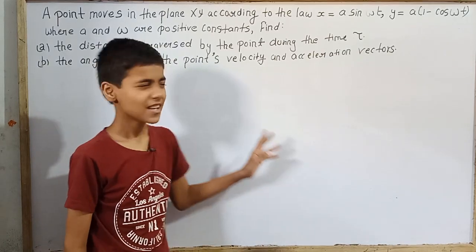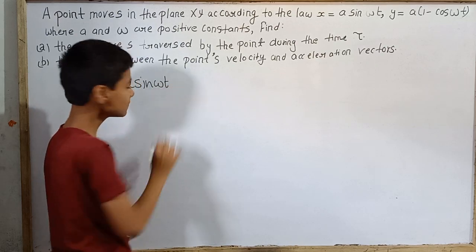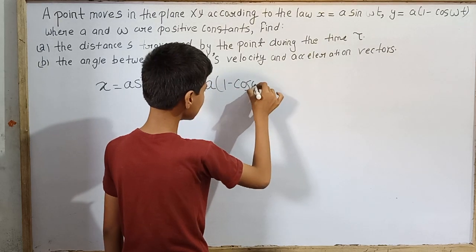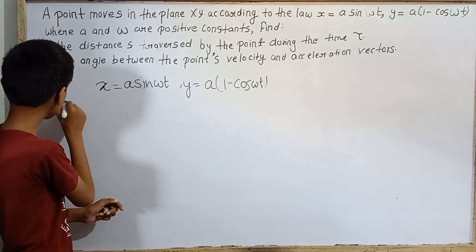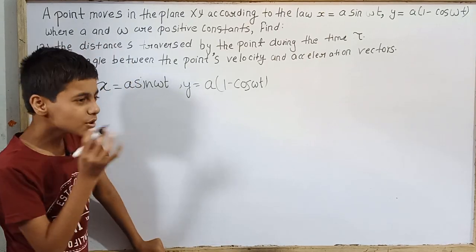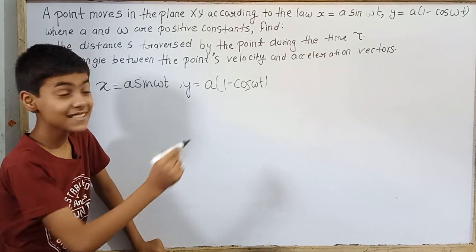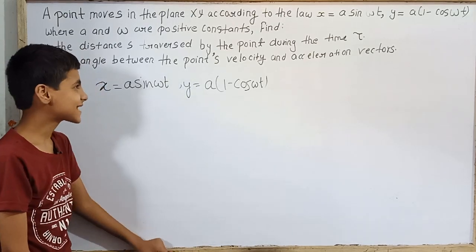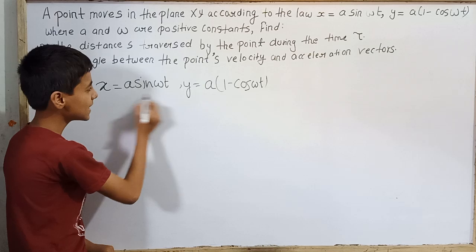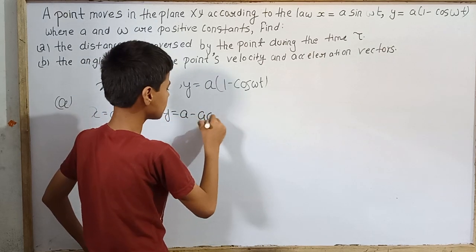This is a very easy question. The equations given are x = a·sin(ωt) and y = a(1 - cos(ωt)). We need to find how much distance the point covers in time τ. I don't know what τ time is exactly, I just know it is τ. So I'll show you how to find the distance in this τ. It may look like a big question but we are just going to handle it.